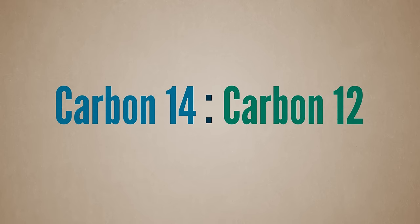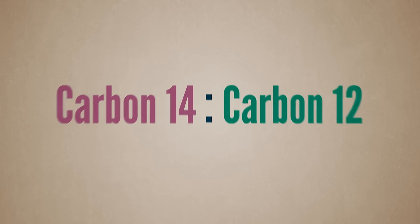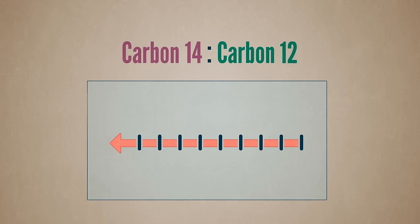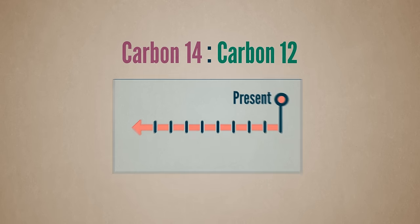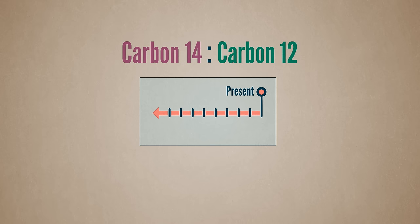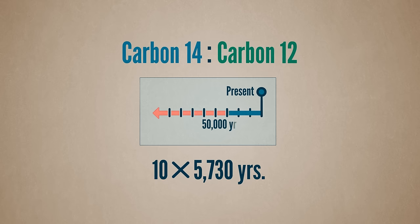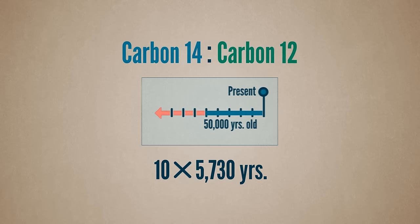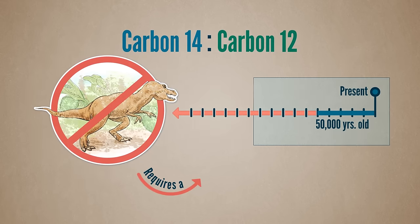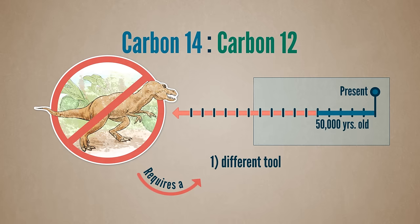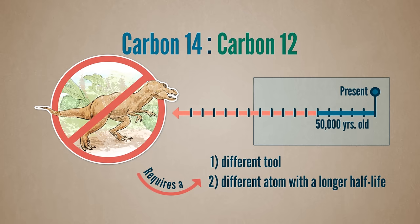Now, it's important to realize that eventually there won't be enough carbon 14 to measure. So there's a window of time where you can date something using carbon 14. The window of time is roughly 10 times the half-life. So if we are dating an object using carbon 14, which has a half-life of 5,730 years, then scientists can use it to date something that's up to 50,000 years old. Anything older than 50,000 requires scientists to use a different tool and a different atom with a longer half-life.